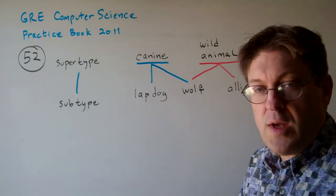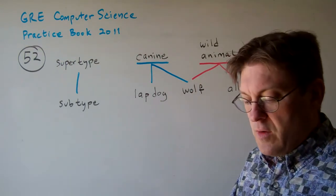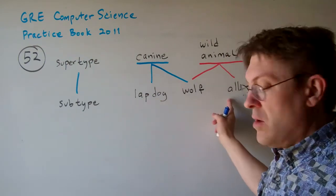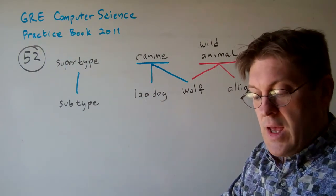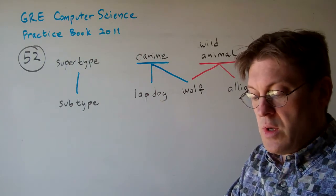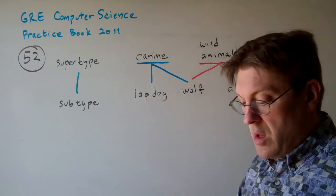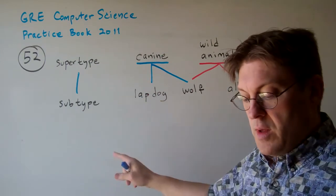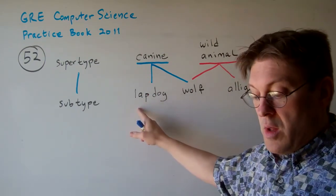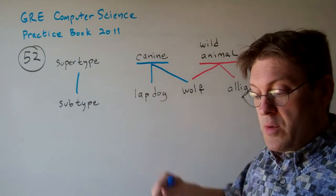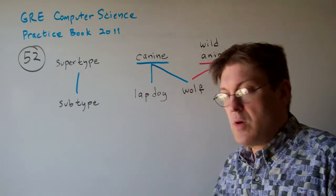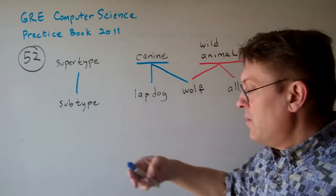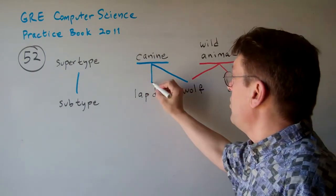Basically, let's just read A carefully because A is the correct answer. An instance of a subtype may be used in any expression in which an instance of a supertype may be used because the subtype must support a superset of the operations supported by the supertype. So in other words, the subtype's got to provide more different operations than the supertype does.